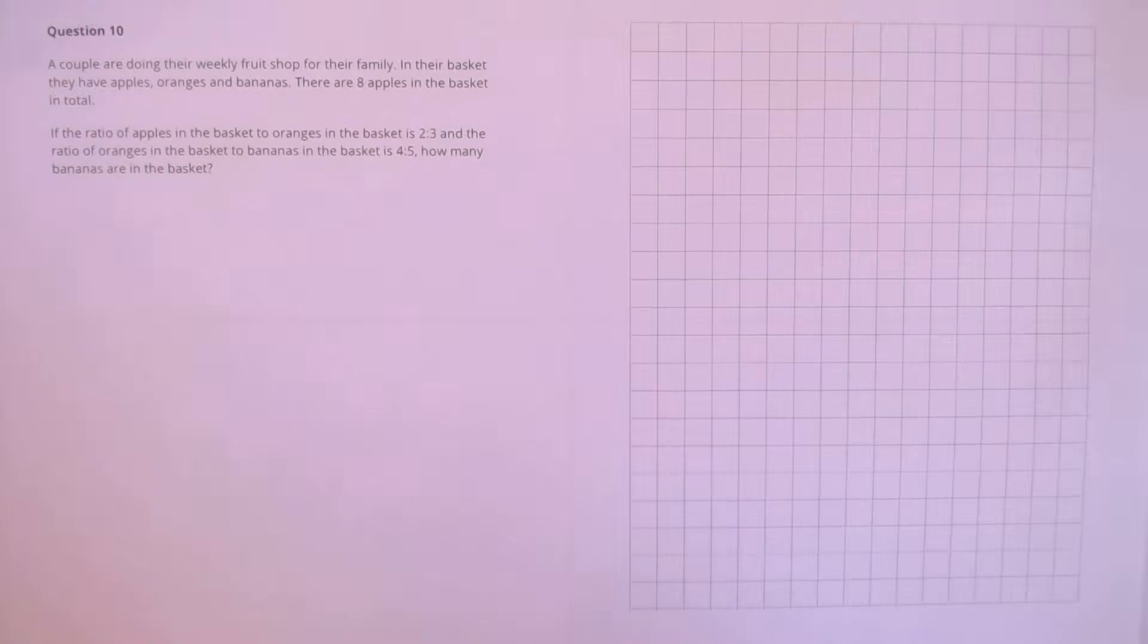Question 10. A couple are doing their weekly fruit shop for their family. In their basket they have apples, oranges and bananas. There are 8 apples in the basket in total. If the ratio of apples in the basket to oranges in the basket is 2 to 3, and the ratio of oranges in the basket to bananas in the basket is 4 to 5, how many bananas are in the basket?